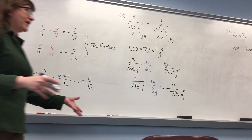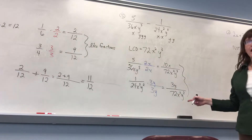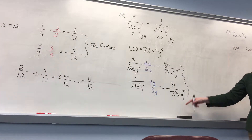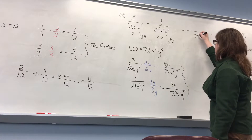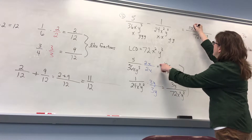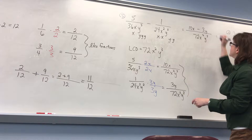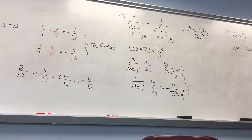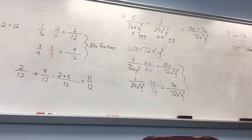Now all of my fractions have the same denominator. So since they all have the same denominator, I can keep that denominator — 72x squared y cubed — and perform my operation across the top: 10x minus 3y. I do want to see if there's anything I can simplify, but remember you can only cancel factors. Can I factor 10x minus 3y? No. So there's nothing I can do. Resist the temptation to cancel with the y's. This is our answer.